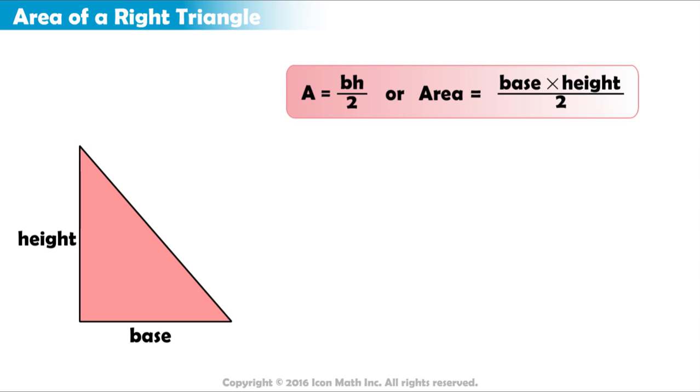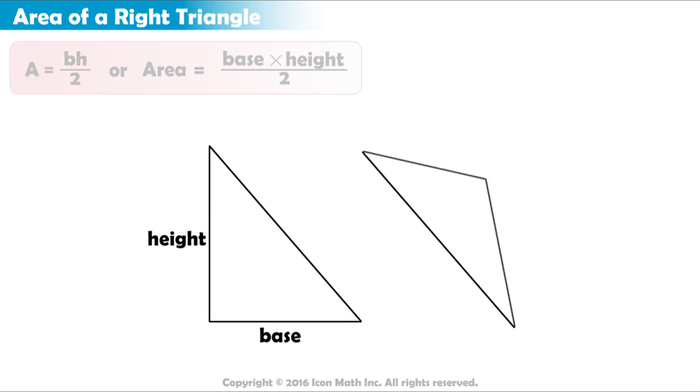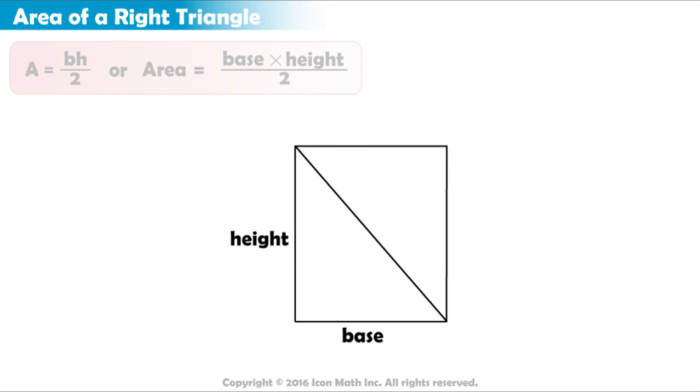Let's consider for a moment where this formula comes from. If we were to double our triangle and flip it around so that it lays on top of our original one, we see that we've now created a rectangle.